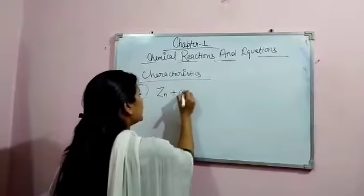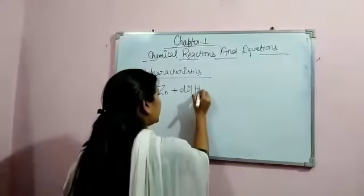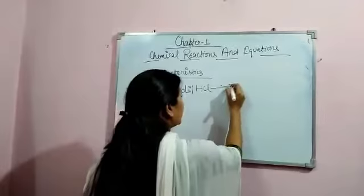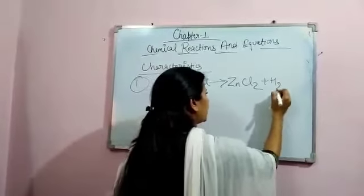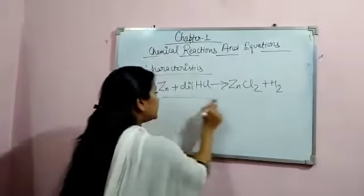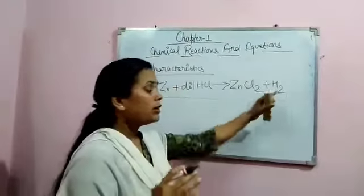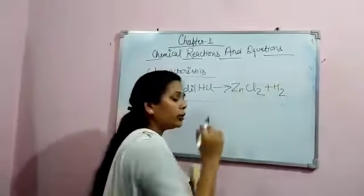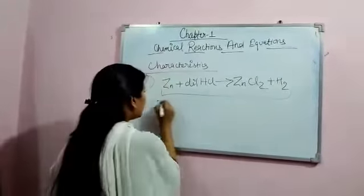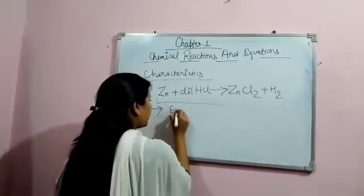Zinc plus dilute hydrochloric acid gives zinc chloride plus H2. From this example, we will come to know that in a chemical reaction a gas might be liberated. So one of the characteristics is evolution of gas.